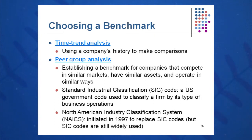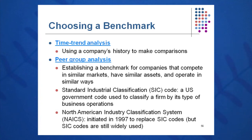Also, peer group analysis: how are we doing relative to our peers? We can look by SIC code, now called NAICS code — the North American Industry Classification System, which replaced SIC codes in 1997. A company named Robert Morris Associates, now called Risk Management Associates (RMA), puts all these ratios together within peer groups and NAICS codes, broken down by size of company: small, medium, and large companies within our industry.